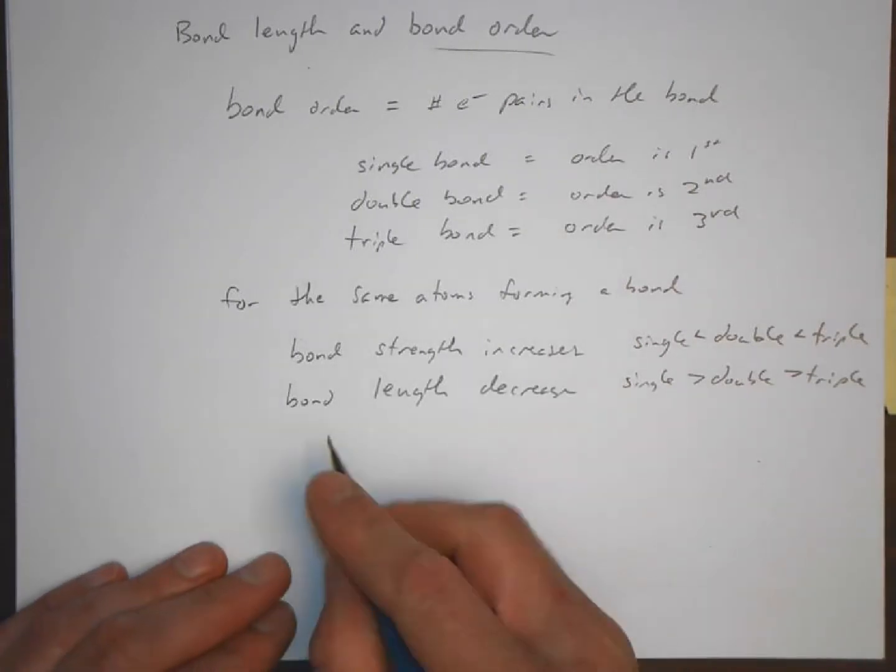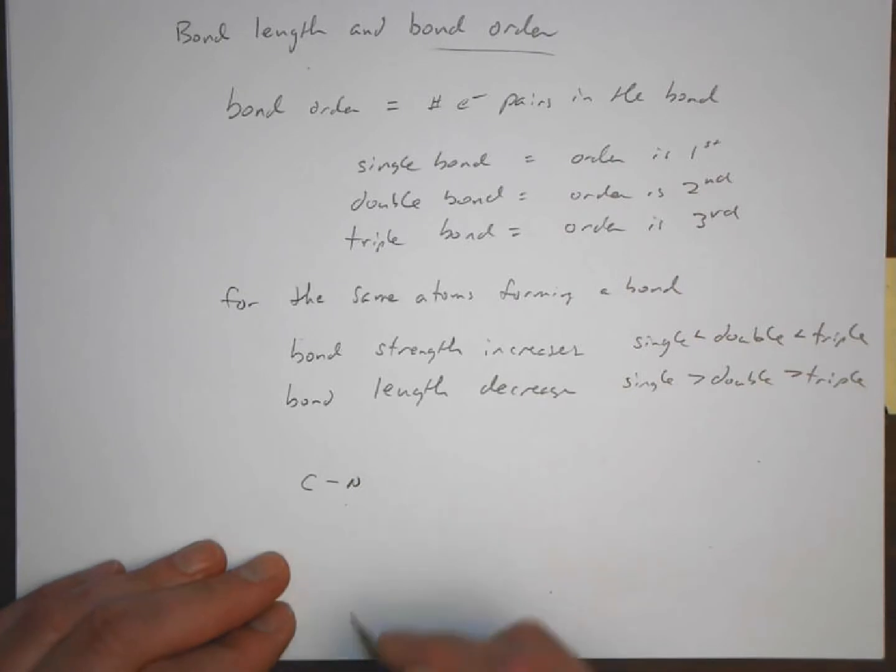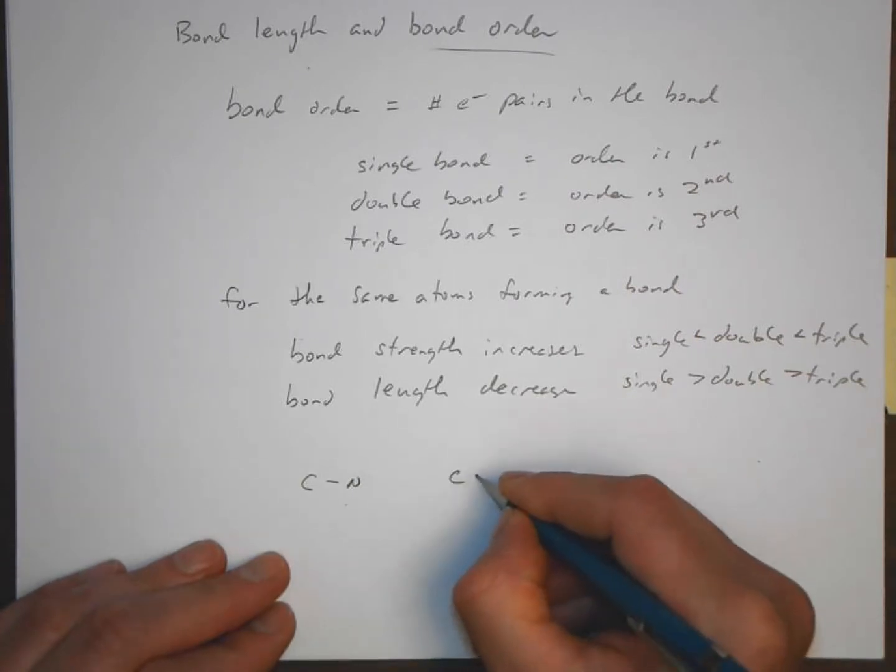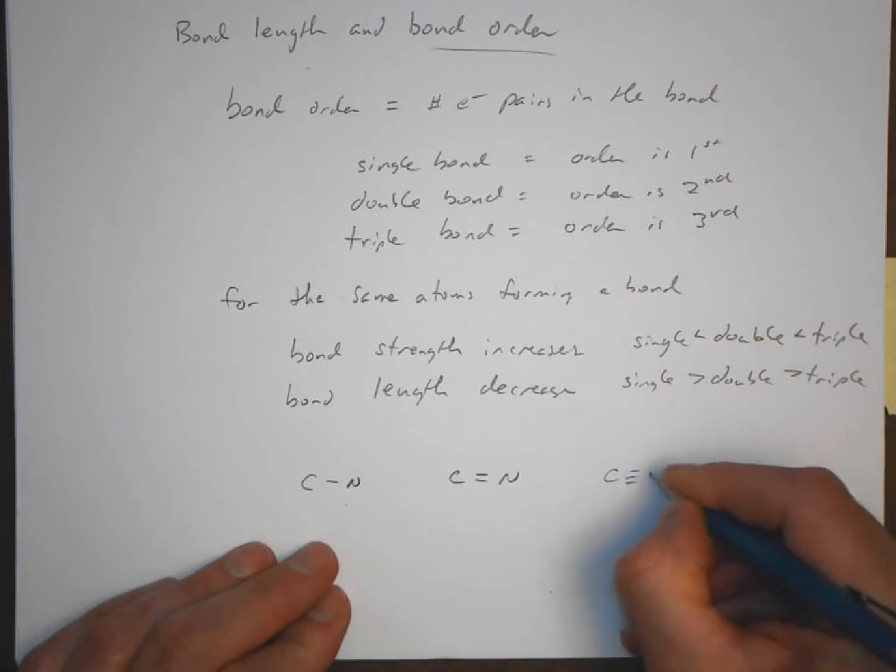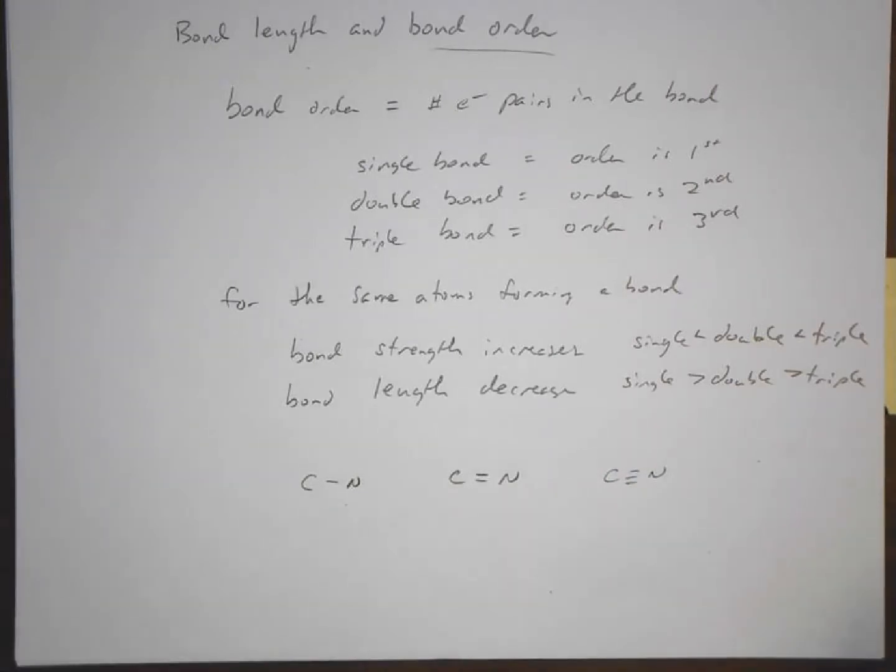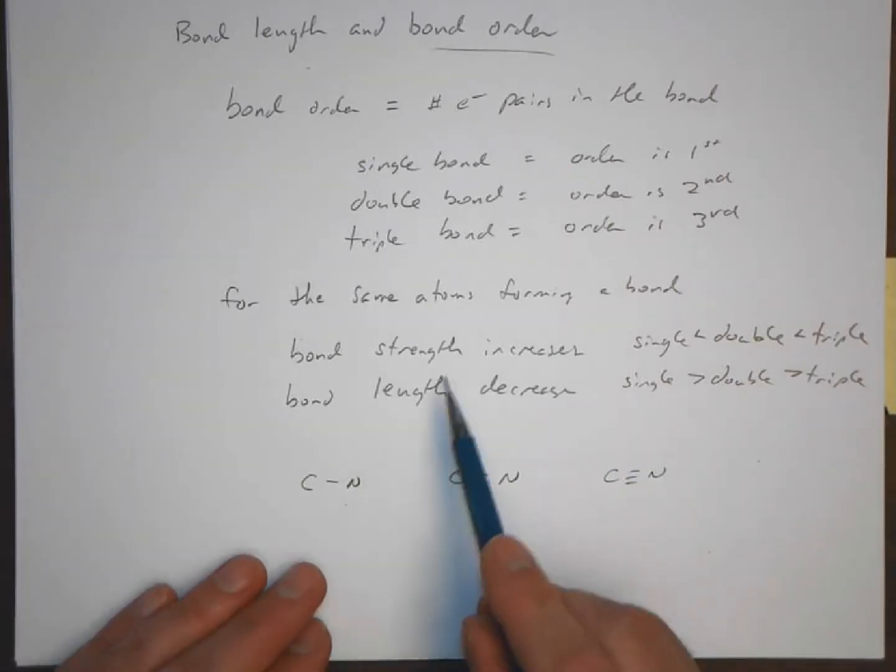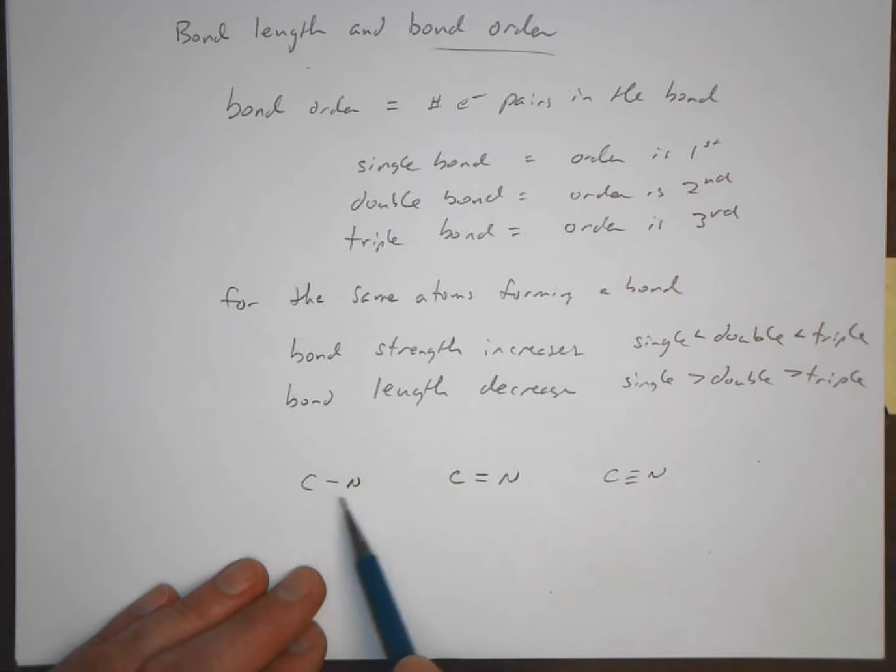If we're comparing a carbon-nitrogen single bond, and a carbon-nitrogen double bond, and a carbon-nitrogen triple bond, the strength of the bond increases as we go from single, double, to triple. This would be the strongest bond. This would be the weakest bond, comparatively, relatively.